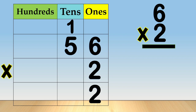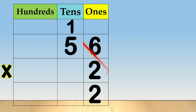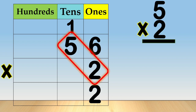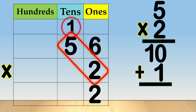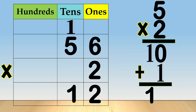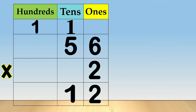Carry one ten to the tens column. Then, multiply the digit in the tens place. Five times two is equal to ten tens. Add the one ten that you have carried over. Ten plus one is equal to eleven. Now, regroup eleven tens as one hundred plus one ten. We write one in the tens column and carry one to the hundreds column, then bring down one in the hundreds column. So, fifty-six times two is equal to one hundred twelve.